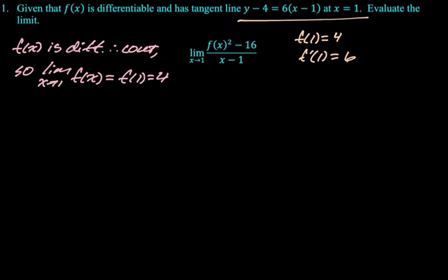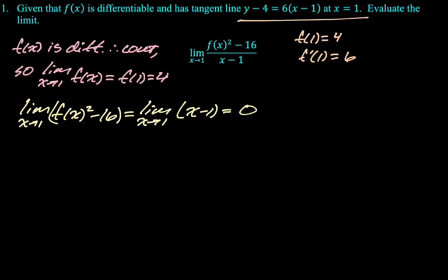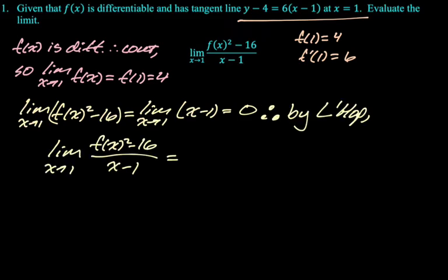So once I've done that, now I'm just in like the standard L'Hopital's type of thing. So I'm gonna do the limit of the numerator equals the limit of the denominator equals 0. Therefore, by L'Hopital's, the original limit is equal to, we apply L'Hopital's, derivative of the top is going to be 2 times f times f prime, and then the derivative of the bottom is just 1.